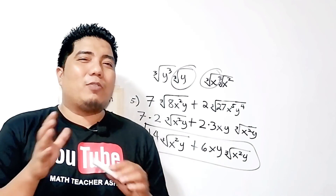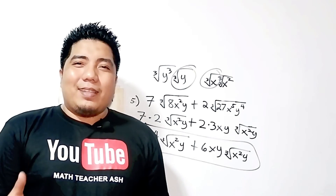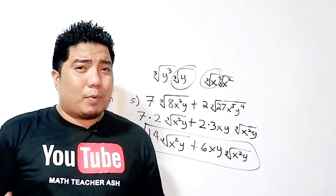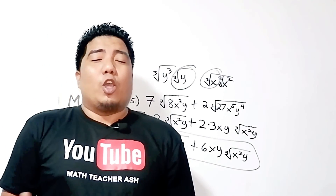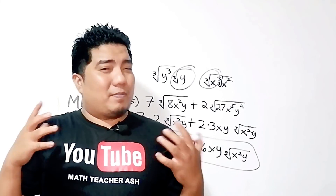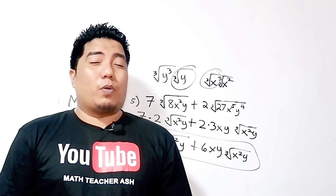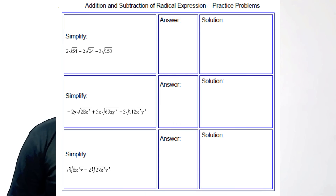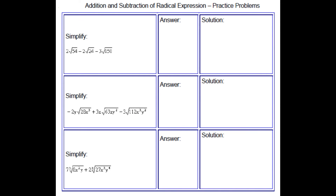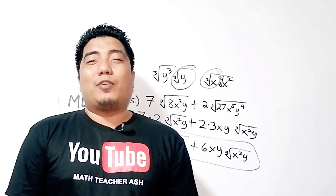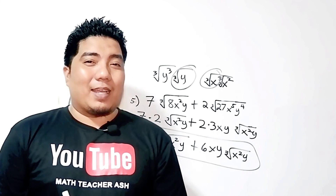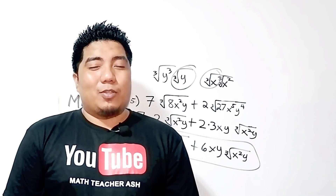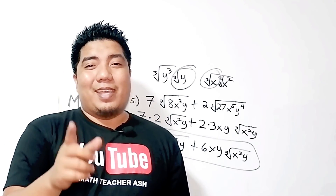I hope, my dear math learners, you now have the understanding and the concrete idea of how to add and subtract radicals. If you have some confusions on our examples, you can rewind each example so that you can understand it thoroughly. If you still have misunderstandings, you can put your inquiries in our comment section below. This is the time that I will challenge you whether you have understood our topic. I hope you have a wonderful time learning how to add and subtract radicals. This is still your free access math teacher Ash. Always remember, it is fun to learn mathematics if we are together learning. Thank you so much. God bless, and keep safe always.